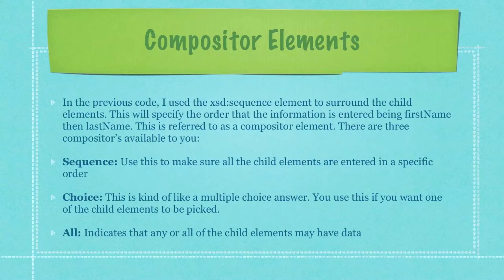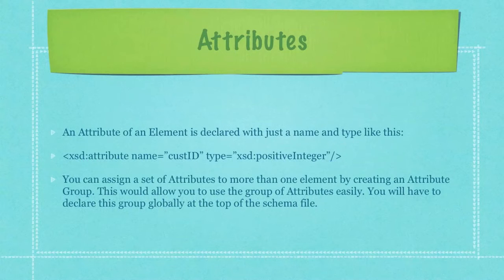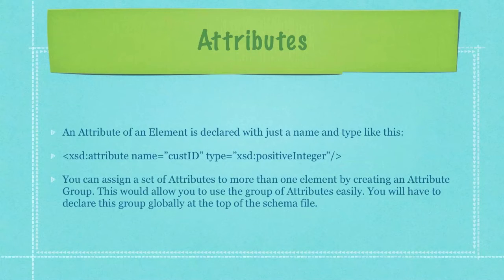There are three compositors available to you. Sequence: use this to make sure all the child elements are entered in a specific order. Choice: this is kind of like a multiple choice answer — use this if you want one of the child elements to be picked. And 'all' indicates that any or all of the child elements may have data. An attribute of an element is declared with just a name and type. Here I'm defining an attribute named customer ID and stating that its value must be a positive integer.